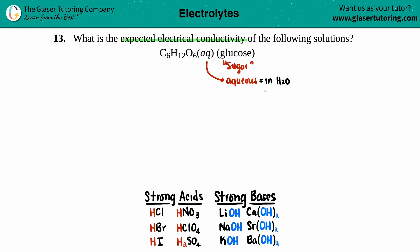So I have a bunch of glucose in water. If I have a probe that is attached to a light bulb and I put it in this solution, would the light bulb turn on? Would this be electrically conductive?